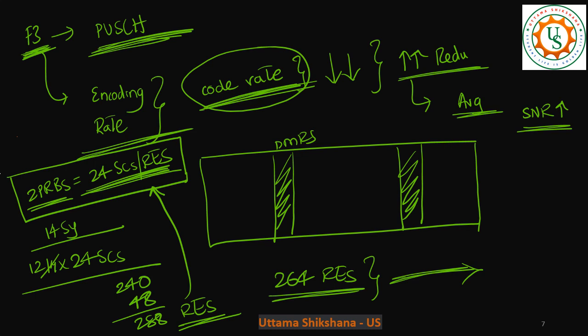And get the enhanced SNR. By that way, you know, format 3 also improves the coverage. I think, with format 1 and format 3, you got the clarity in how long PUCCH formats are improving the coverage.